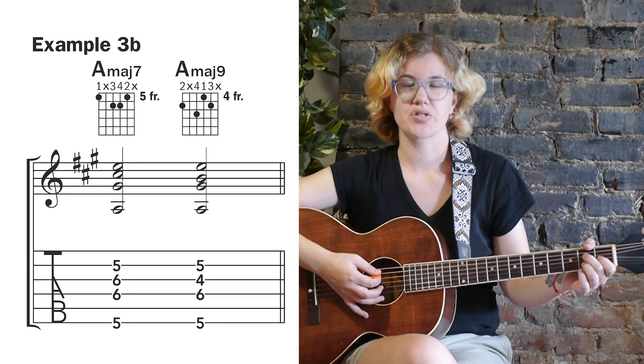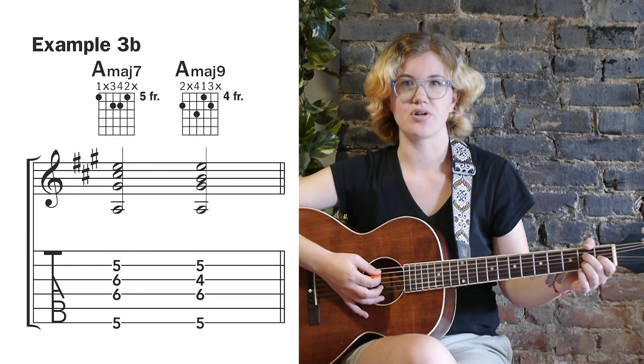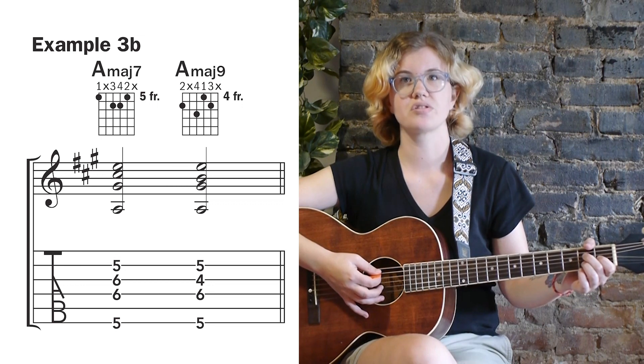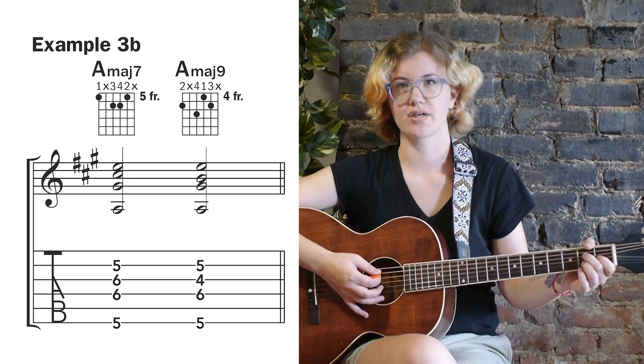Example 3b shows us how to get to A major 9 from A major 7 using closed, jazzier voicings.